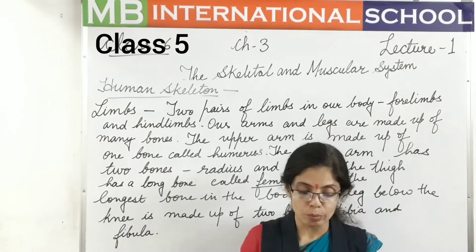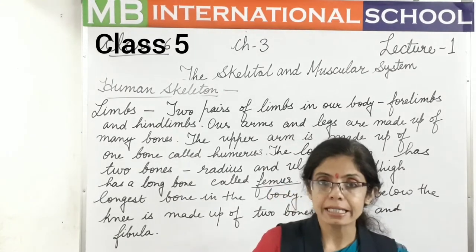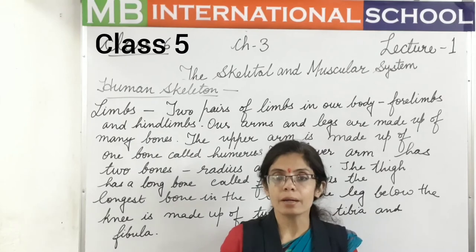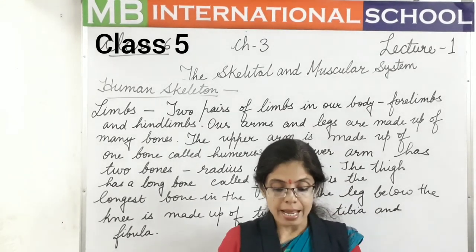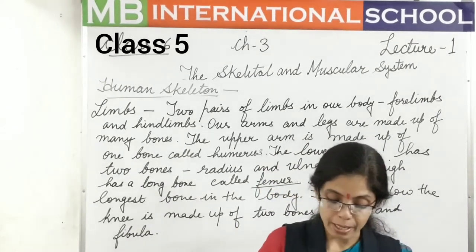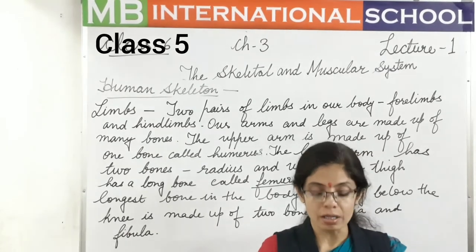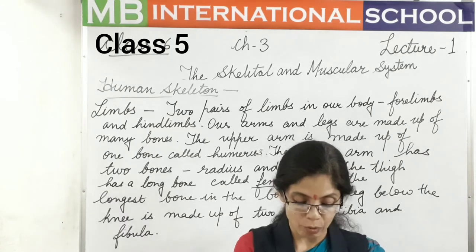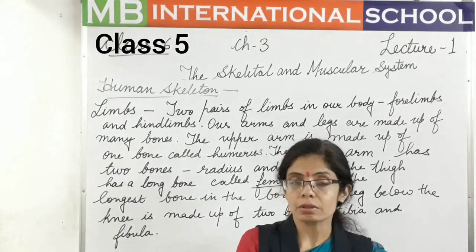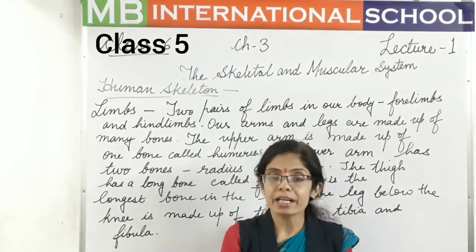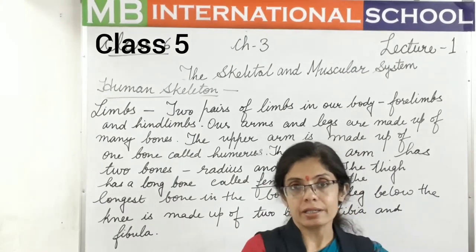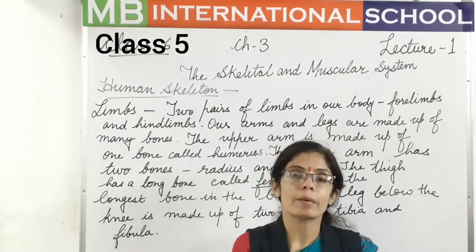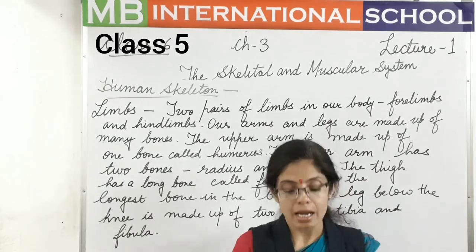The upper part of the leg, the thigh, has a long bone called the femur, which is the longest bone and can bear the whole weight of the body. The part of the leg below the knee is made up of two bones: the tibia and the fibula.